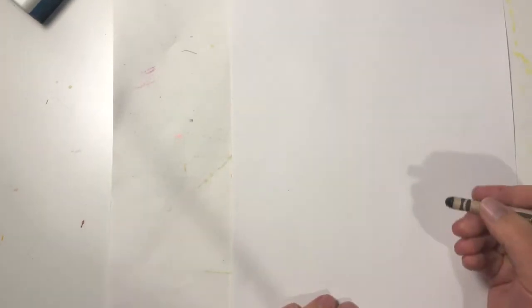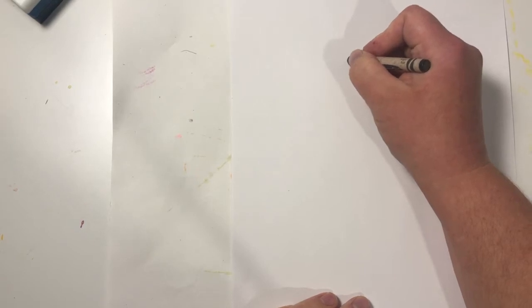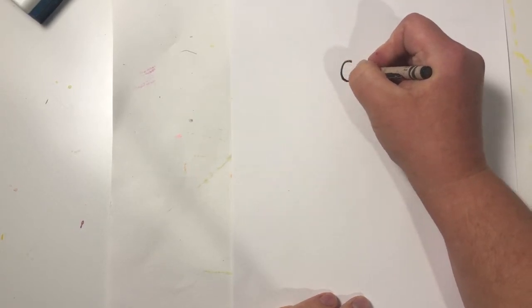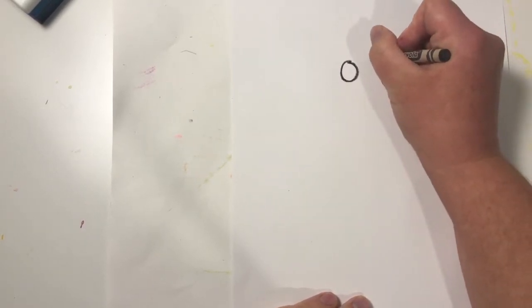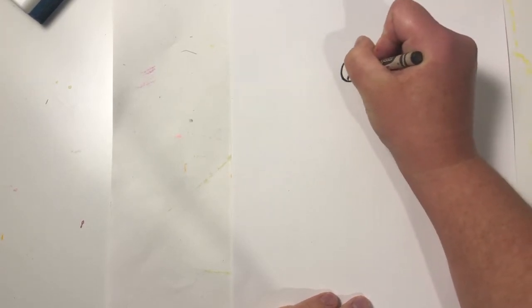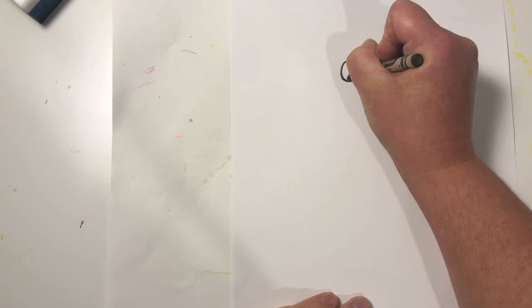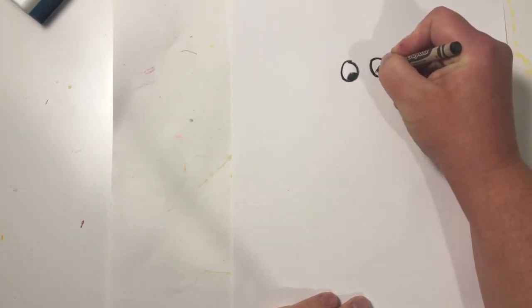All right, so first thing we're going to do is work on drawing Scribble. We are going to draw his eyes first. We're not going to draw his body, we're just going to draw his eyes. So that's two circles, and you put a little bit of black inside there.